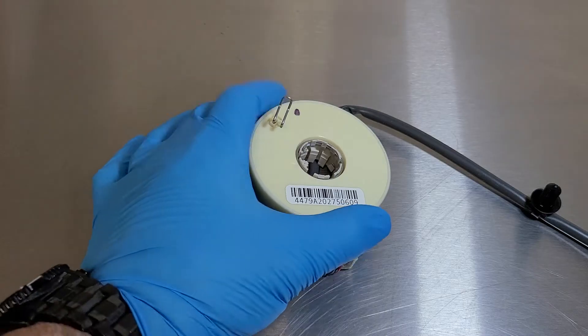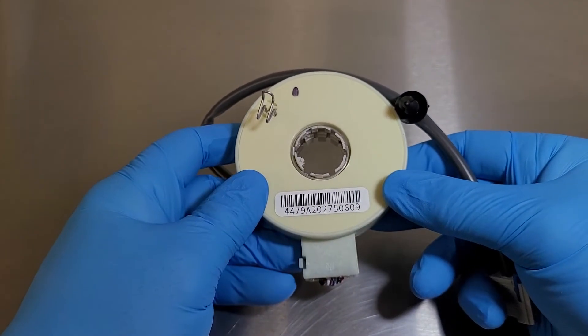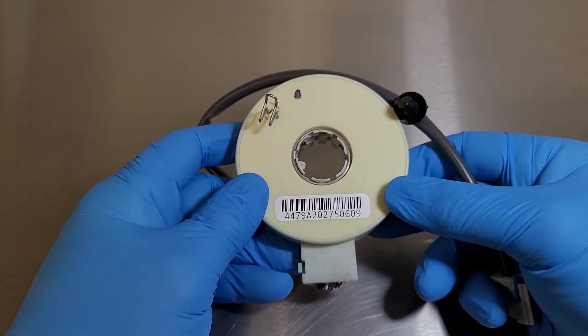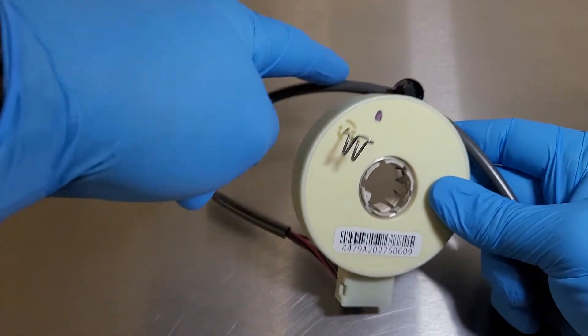You see right in front of us here we have a GM torque sensor. This will be for Pontiac G6s, Saturn Auras, Chevy Malibus. You can tell it's GM because of the gray cable here.